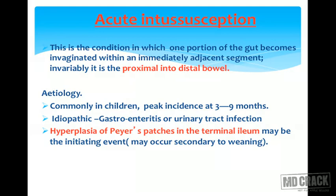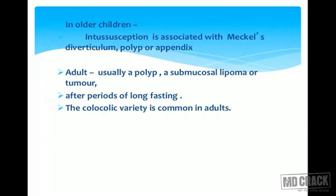Etiology is commonly seen in children with peak incidence at 3–9 months. It can be idiopathic, or gastroenteritis and urinary tract infection can be followed by intussusception. The main causative factor is hyperplasia of Peyer's patches in the terminal ileum, which may be the initiating event secondary to weaning. In older children, it is associated with Meckel's diverticulum, polyp, or appendix.